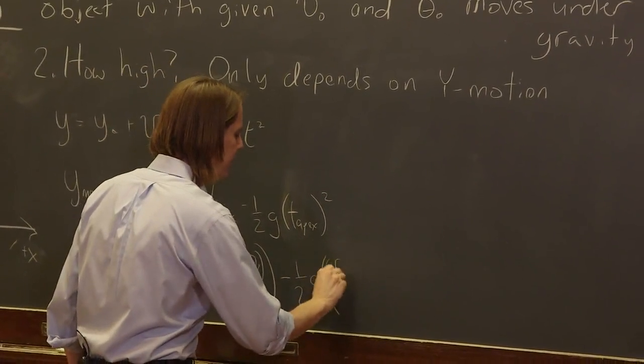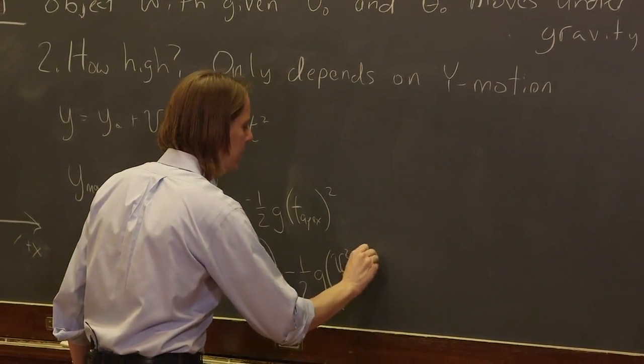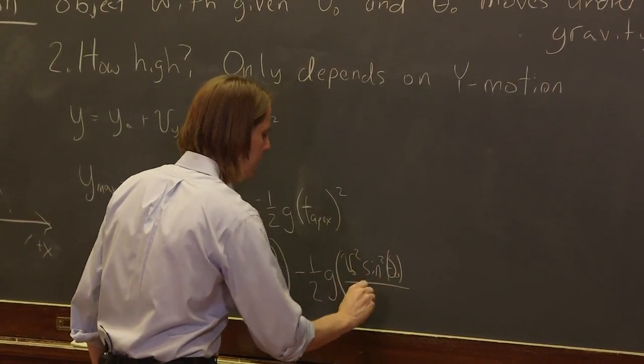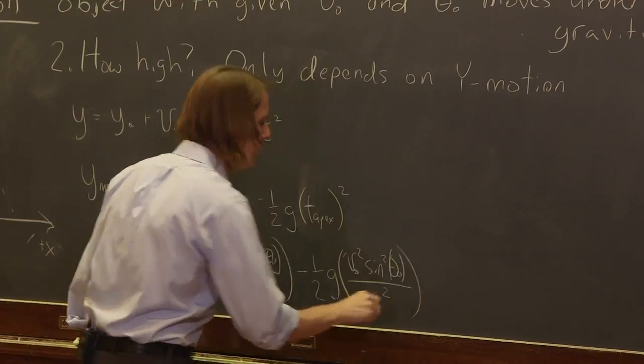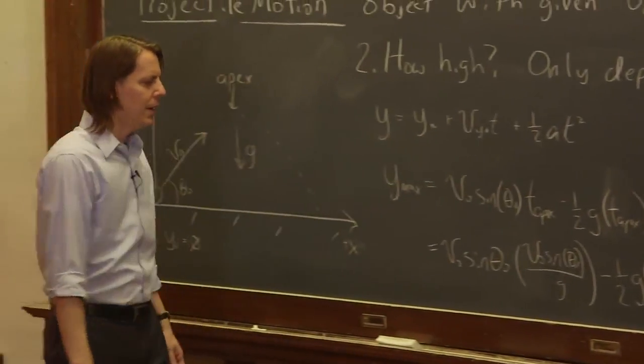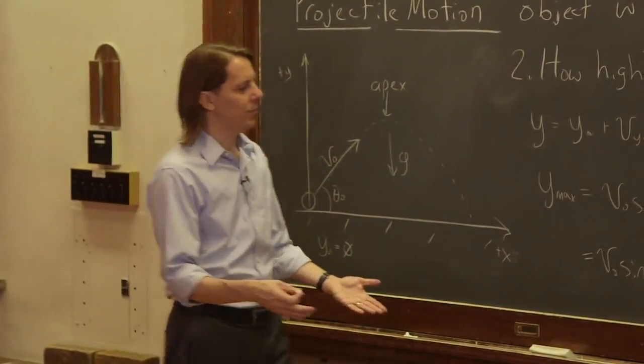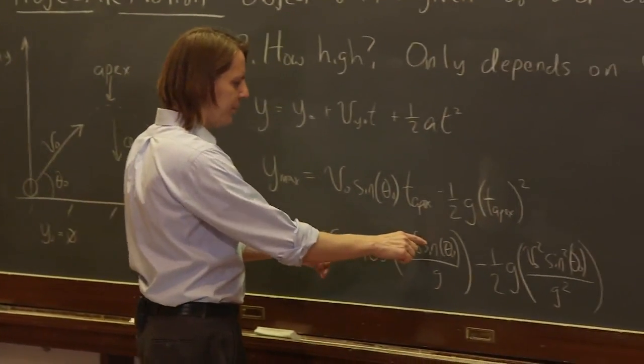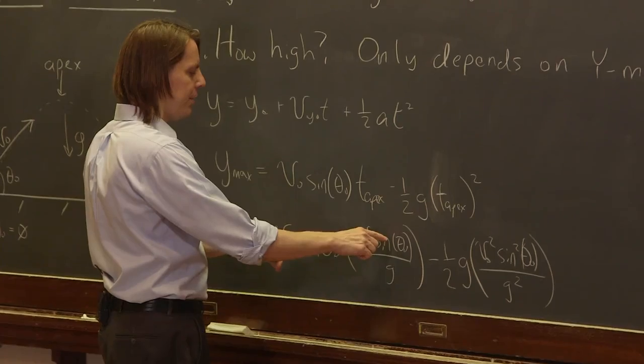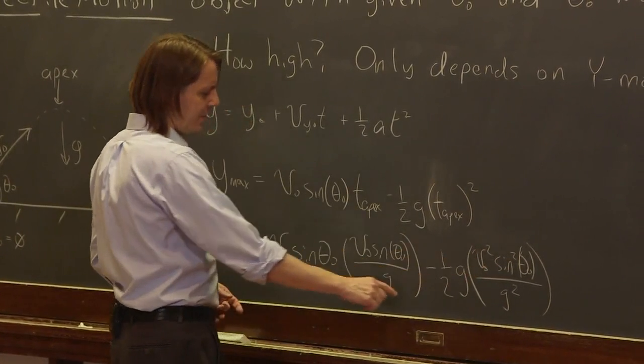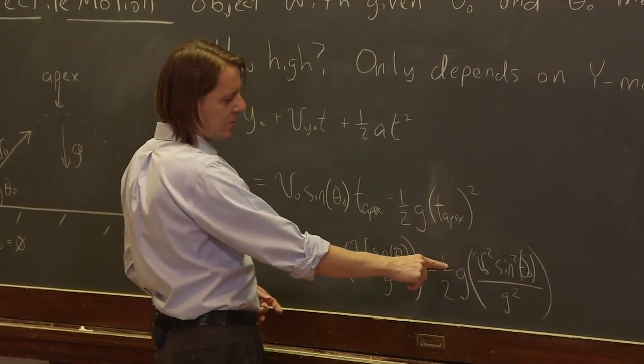You can see this makes a lot of stuff cancel. Both terms are v naught squared sine squared theta naught. This one is over g and this one is over one half, one over 2g. That g cancels that g squared, so it's really this one is half of that one.